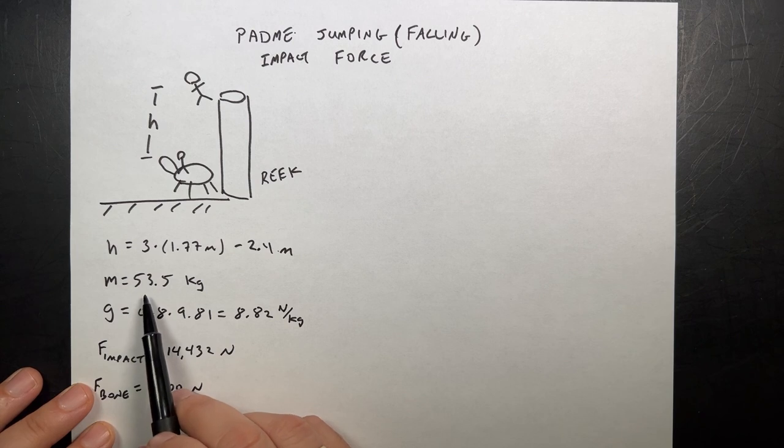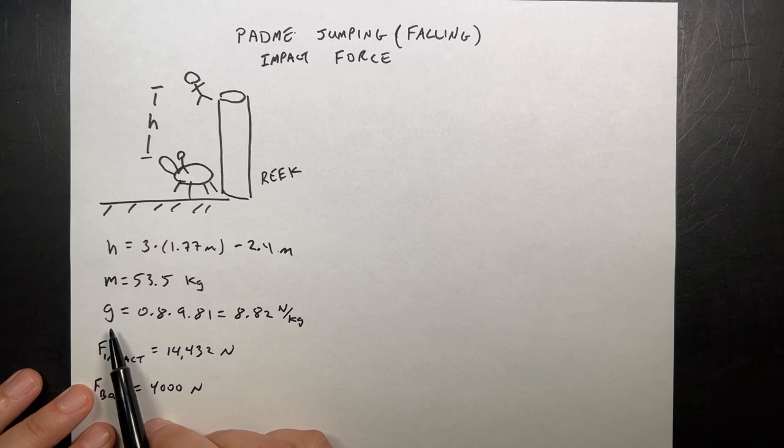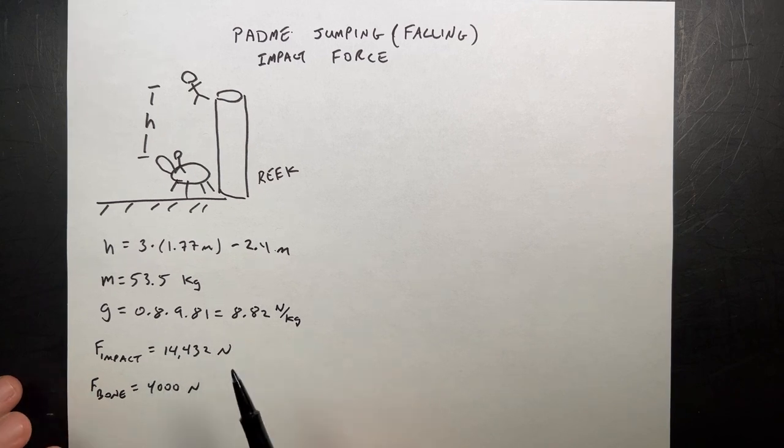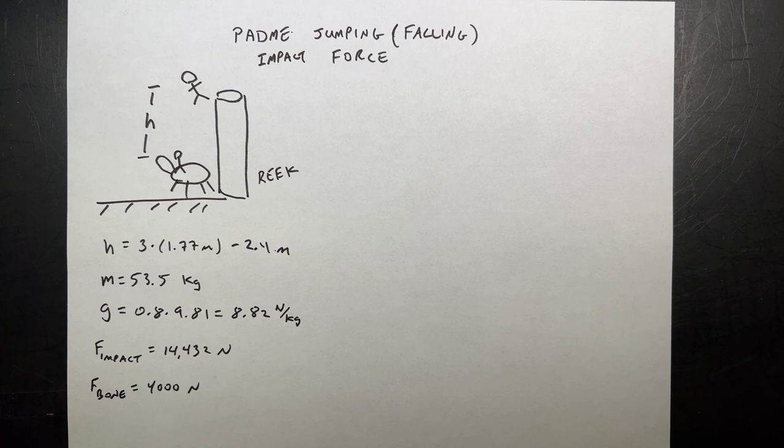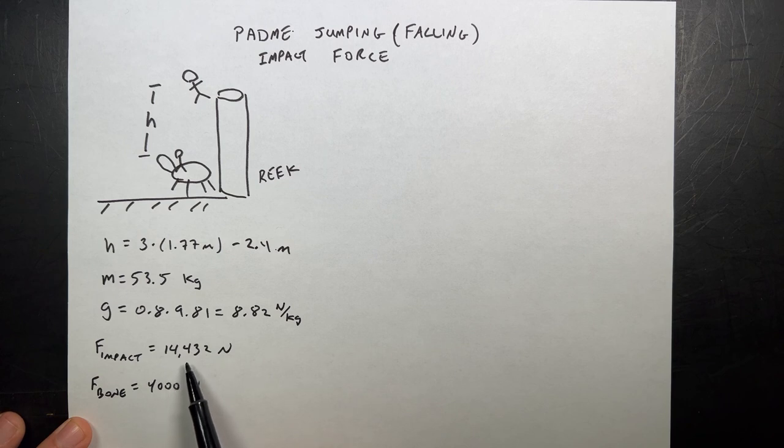The mass of Padme. I think she looked up the mass of Natalie Portman: 53.5 kilograms. Apparently the gravitational field on Geonosis, which is where this takes place, is only 80% of Earth, which they call standard Star Wars gravity. So G is just 8.82. Personally, I always use 9.8. I never measured different gravitational fields. I think that came from some database where they kind of just estimated based on something else.